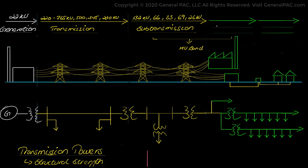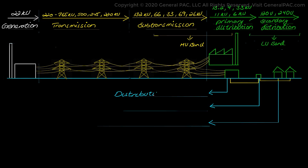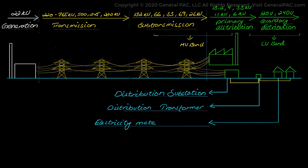An electrical distribution circuit is divided into two main sections: primary distribution and secondary distribution. The primary distribution circuits deliver electric energy from the distribution substation to the distribution transformer, while the secondary distribution circuits carry electric energy from the distribution transformer to the electricity meter of the end consumer.